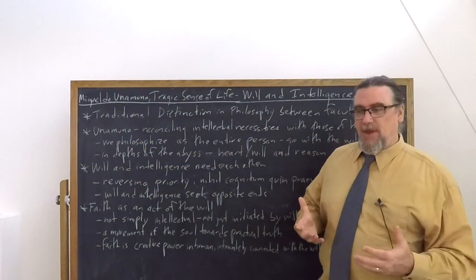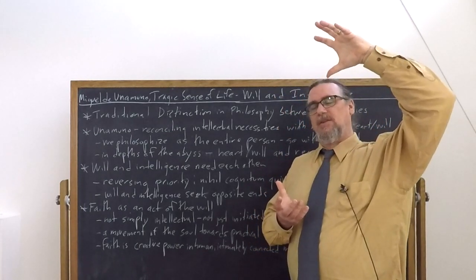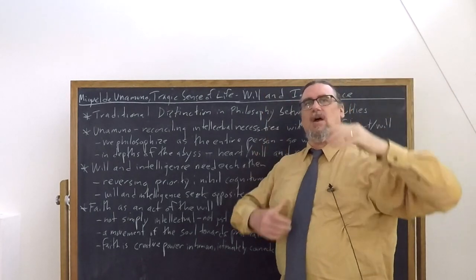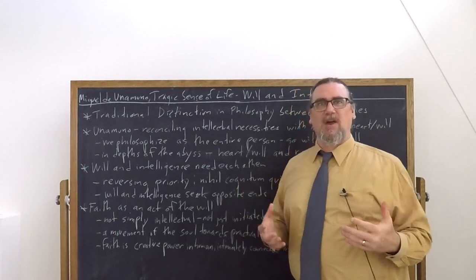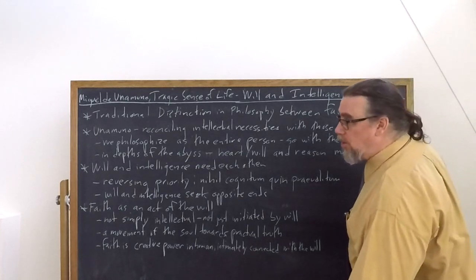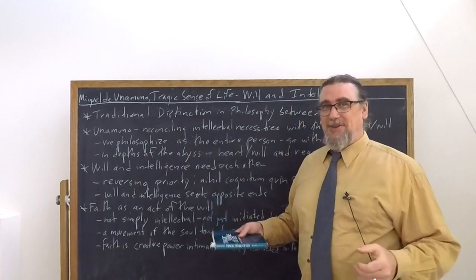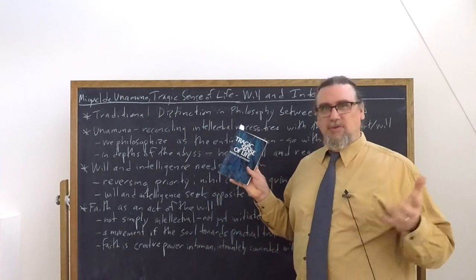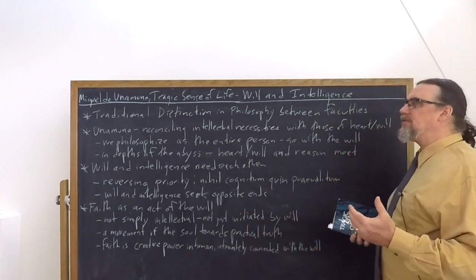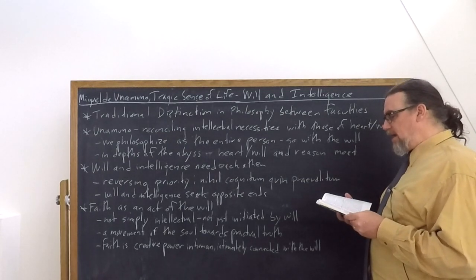Typically, there's going to be a prioritization in philosophy of the intellectual or cognitive or rational faculties over the faculty of decision, choice, desire, however we want to frame it. Now, for Unamuno, if we're going to do philosophy well, and he wants us to do that, if we want to grasp this tragic sense of life that he's talking about, we have to philosophize as an entire person.